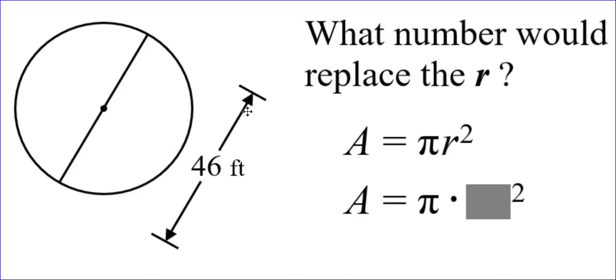Well, no, they did not. This is the line segment that goes the entire way across the circle. That's not radius, that's diameter. You would have to take that diameter divided by 2 to get the value of the radius, which would be 23. So the r for radius gets replaced with the actual radius value, half the value of the diameter.